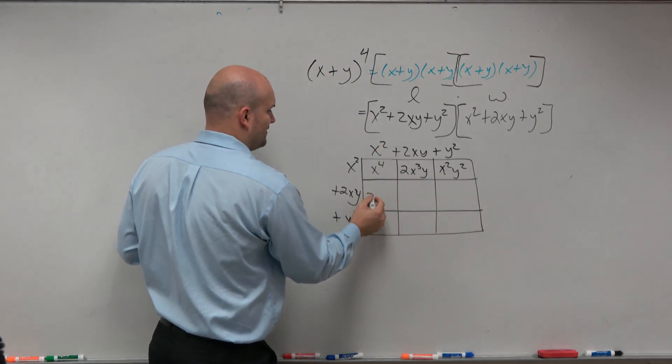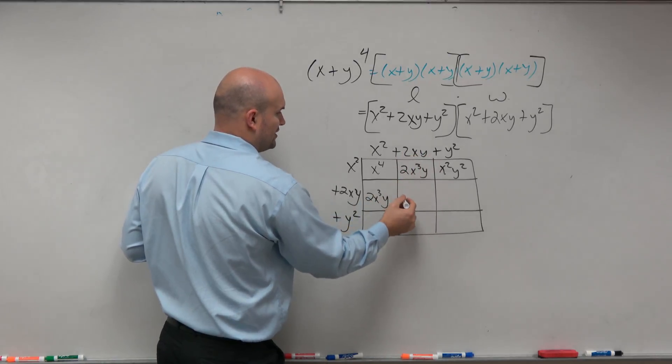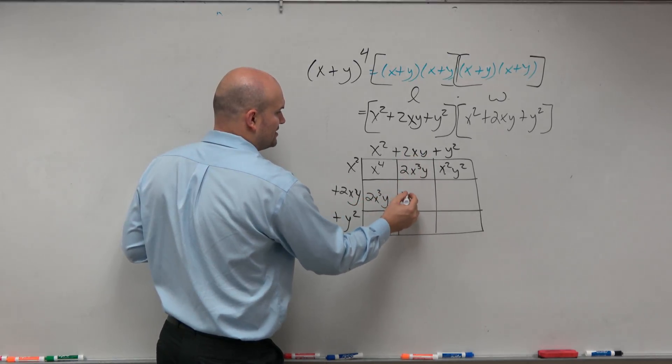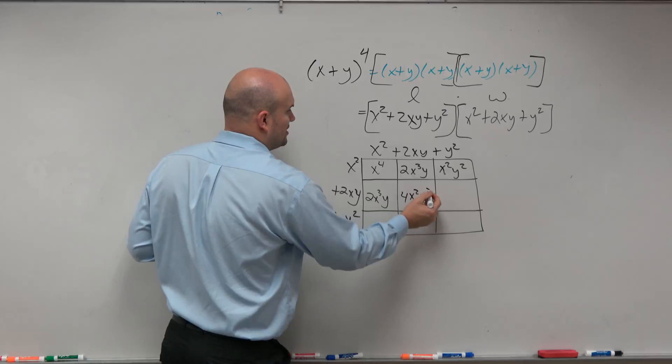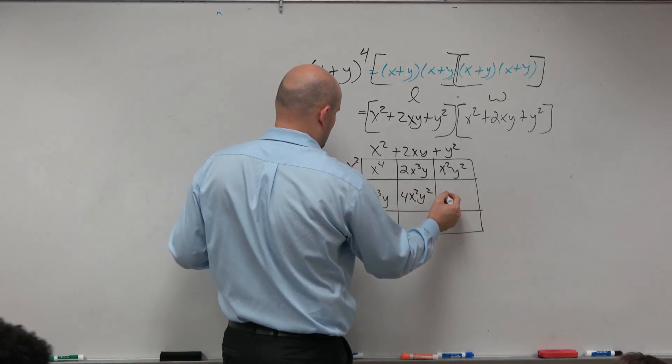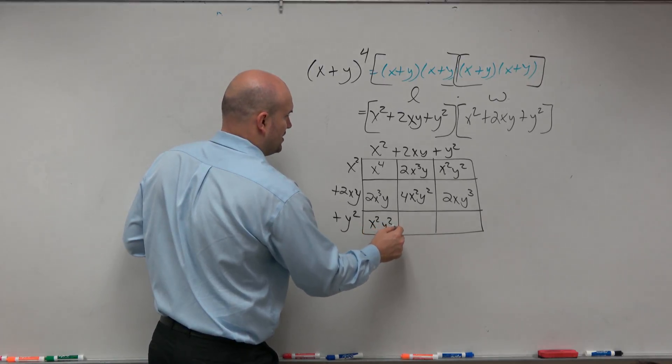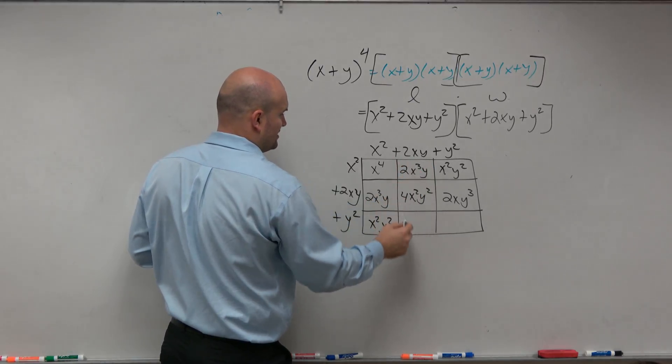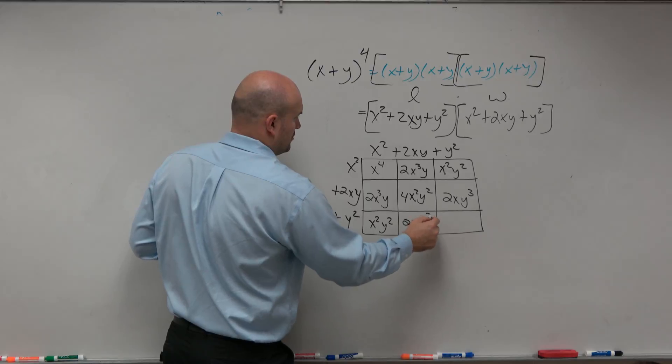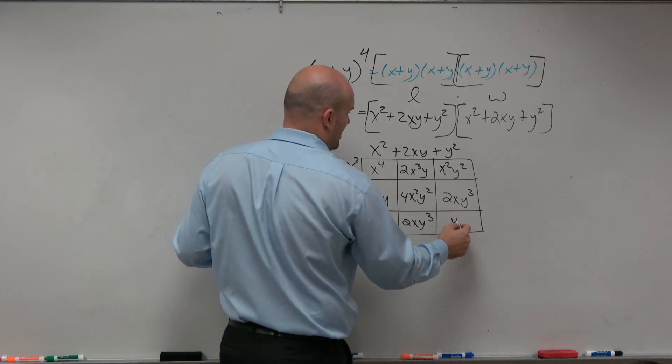Over here, I have 2x cubed y. Over here, 2xy times 2xy is 4x squared y squared. And then therefore, this becomes 2xy cubed. Here I get x squared y squared. Here I get 2xy, so that's going to be 2xy cubed. And then here I get y to the fourth.